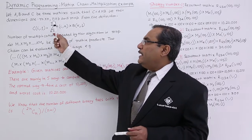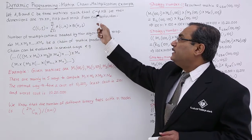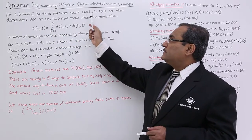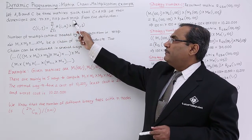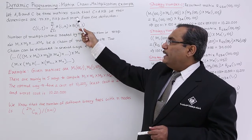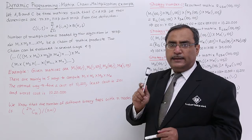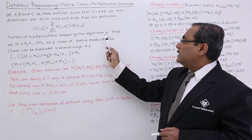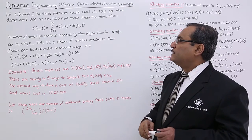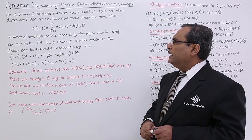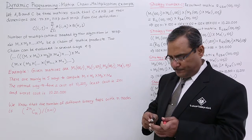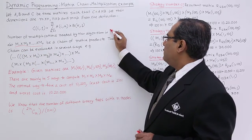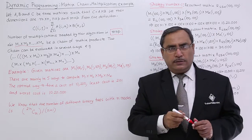If we multiply A and B and keep the product in C, and if A has size m by n and B has size n by p, then the resultant matrix will have size m by p. The complexity, that is the number of multiplications required, will be m into n into p. Please remember this complexity formula as we will use it in our example.